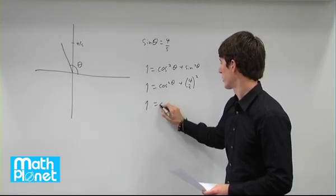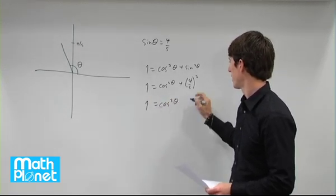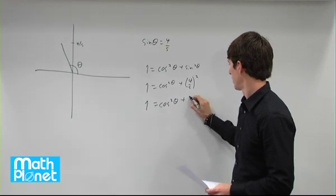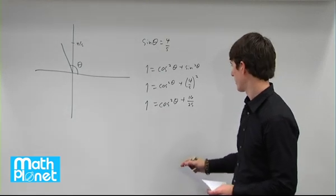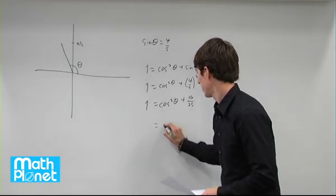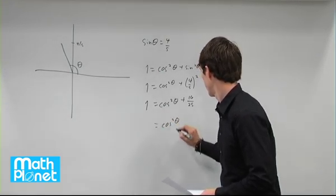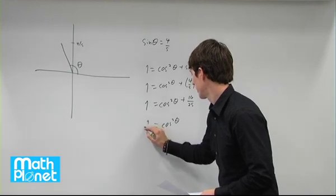1 equals cosine squared theta. This is 16 over 25. I can subtract that from both sides, and I get cosine squared theta is 9 over 25.